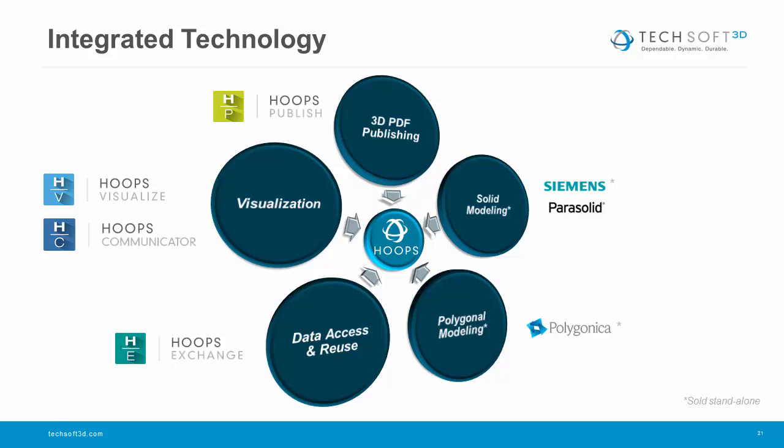Hoops Exchange is able to read accurately over 20 different file formats and give you access to the native geometry that exists therein. Hoops Visualize is a very powerful 3D graphics engine that's powering hundreds of different graphics applications in numerous industries. Hoops Publish is a native 3D PDF creation toolkit that allows you to 3D enrich your application and its reports. And Hoops Communicator builds upon those and allows you to take your data and visualize it within a web context.